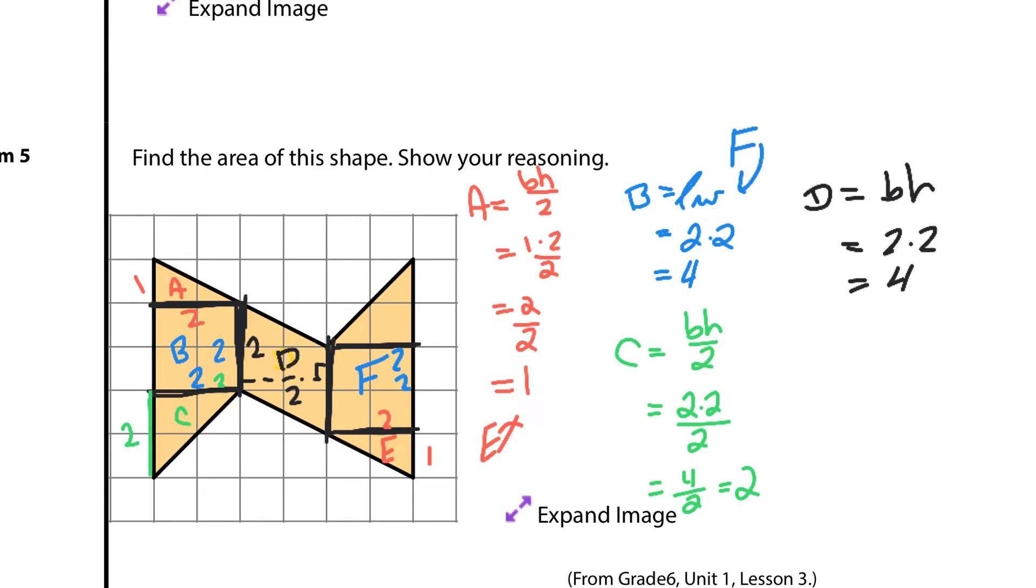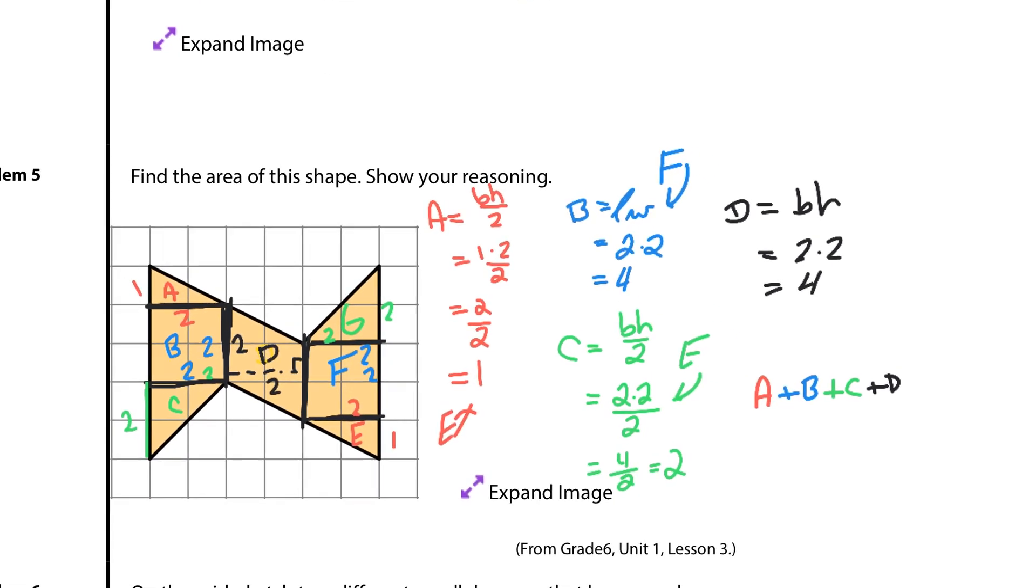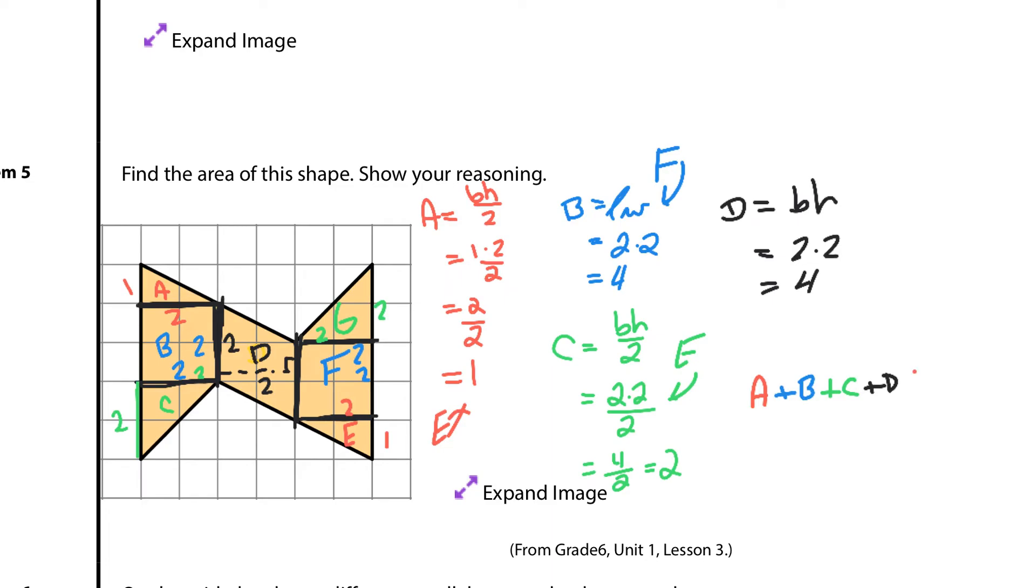And then lastly, I have G here, which is a two by two triangle. And I already did that here in C. And so, if I take, to get the final answer here, and again, this is just one way of doing it. So, shape A plus shape B plus shape C, add it to D, and then add it to E, add it to F, and add it to G.